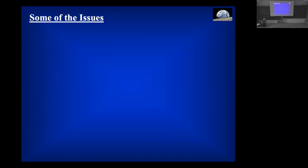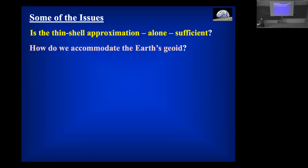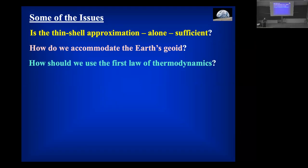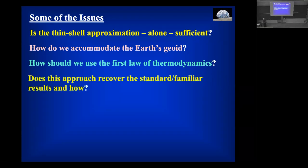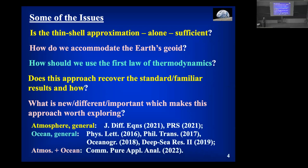Let me list some issues that might be at the forefront of your thinking. Is the thin-shell approximation alone sufficient to do the job? Can we accommodate the Earth's geoid — more important in the atmosphere, less important in the ocean? What's the role of the first law of thermodynamics? Can we recover all the standard familiar results seen in geophysics, and how do they arise? And what is new and different, hopefully important, that makes this worth exploring?